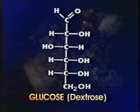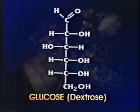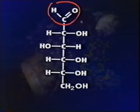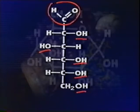Glucose, or dextrose, C6H12O6, is the most important of them all. Glucose is a 6-carbon sugar with an aldehyde group at carbon 1 and hydroxyl groups on the rest of the carbon atoms. We can also draw glucose as a cyclic molecule.